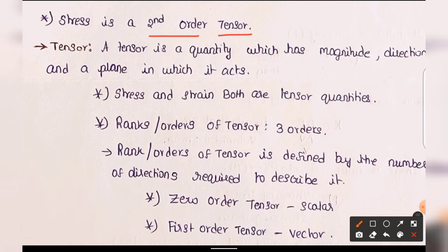First of all, a tensor is a quantity which has magnitude, direction, and plane. These three variables — magnitude, direction, and plane — must all be present for something to be a tensor. Stress and strain, mostly used in strength of materials and structural analysis, are tensor quantities.